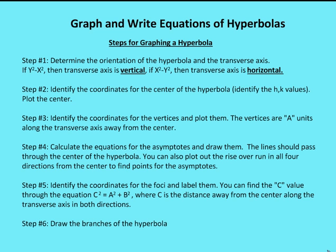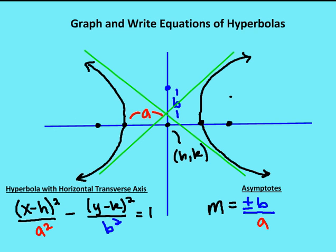Before we get into the detail, let's review the equations for hyperbolas based on their transverse axis orientation. The orientation of the axis for the hyperbola is going to determine the equation and also the slope of the asymptotes. In the case where we have a horizontal transverse axis, our equation is going to be (x minus h) squared over a squared, minus (y minus k) squared over b squared, where h and k are the center of the hyperbola. a is the distance from the center to the vertices, and the slope of the asymptotes is plus or minus b over a.